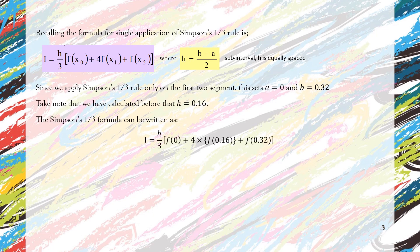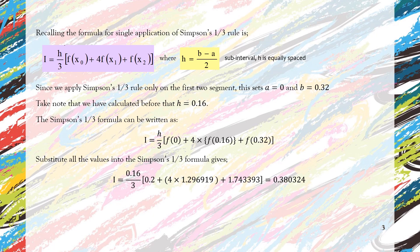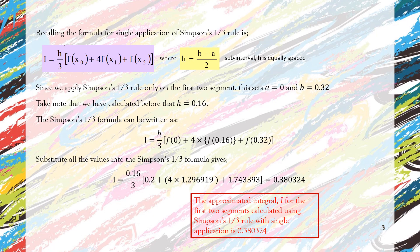And the Simpson's 1/3 formula can be rewritten like this. We substitute the value and we will get 0.380324. So this value is the integral only for the first two segments, and it has been approximated using the Simpson's 1/3 rule single application.